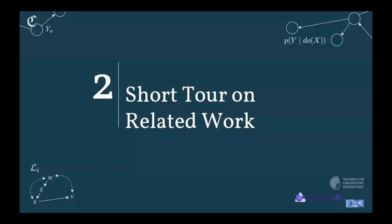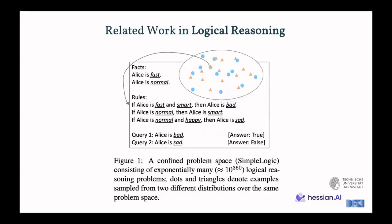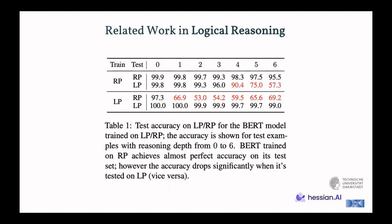A short to related work now, to give a context on where this work fits in and what has been done before and what has been also on the horizon following our work. A group from UCLA presented this work on the paradox of learning to reason from data, where they looked at logic, at logical reasoning, they had a simple logic. For example, what we see here is now the space with these different points and these points denote rules. So, say we know the facts that Alice is fast and Alice is normal. And now, if there's a rule, for example, if Alice is fast and smart, then Alice is bad. If Alice is normal, then Alice is smart. If Alice is normal and happy, then Alice is sad. Then, for a query, whether Alice is bad, we will find out by applying the rules that this answer is true. But for query 2, where we say Alice is sad, we'd find out it's false. And this setup was used to essentially investigate large language models and reasoning capabilities.